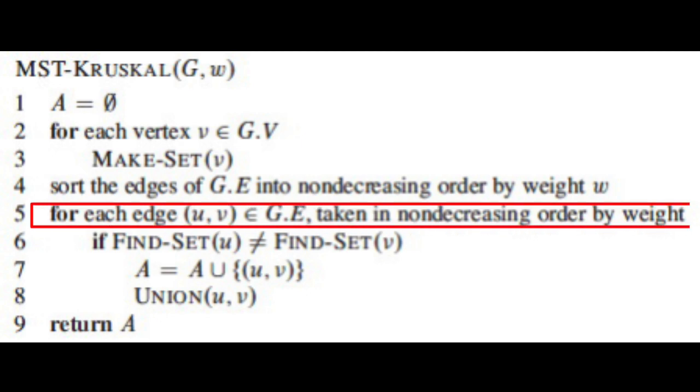The next step is a for loop which is used to examine the edges of the graph, which is already sorted in the increasing order of the weight in the previous step, so that the edge which has the minimum weight is accessed first.